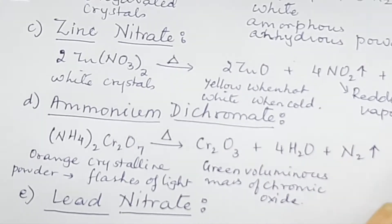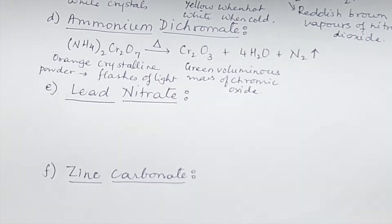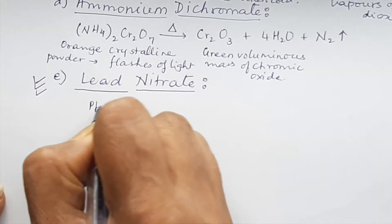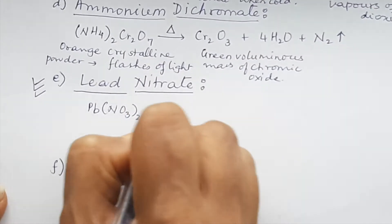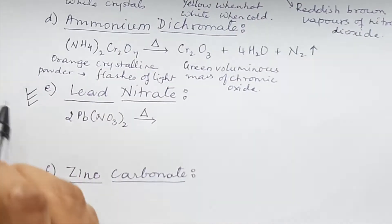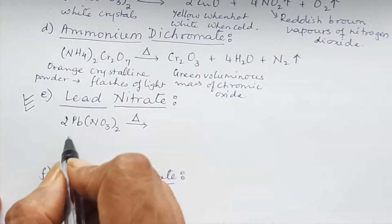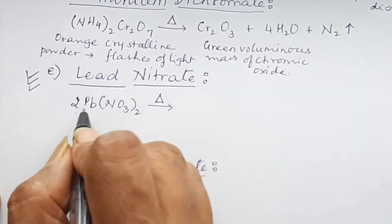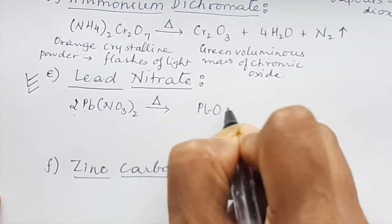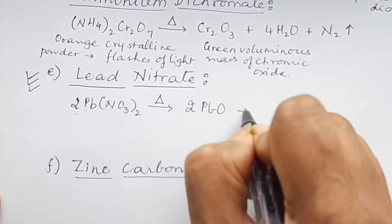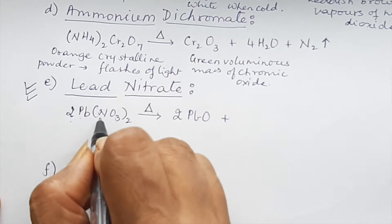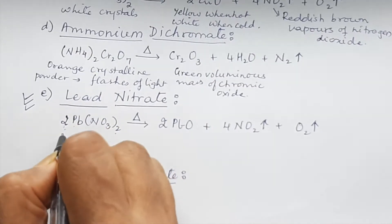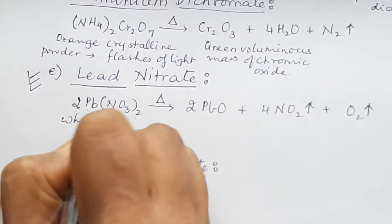Lead nitrate is an all-time favorite of examiners. Lead nitrate is Pb(NO₃)₂. On heating, like zinc nitrate, we take 2Pb(NO₃)₂ — in the middle region, a nitrate gives an oxide — so: 2Pb(NO₃)₂ → 2PbO + 4NO₂↑ + O₂↑. There are 4 nitrogen atoms, giving 4NO₂, plus O₂.